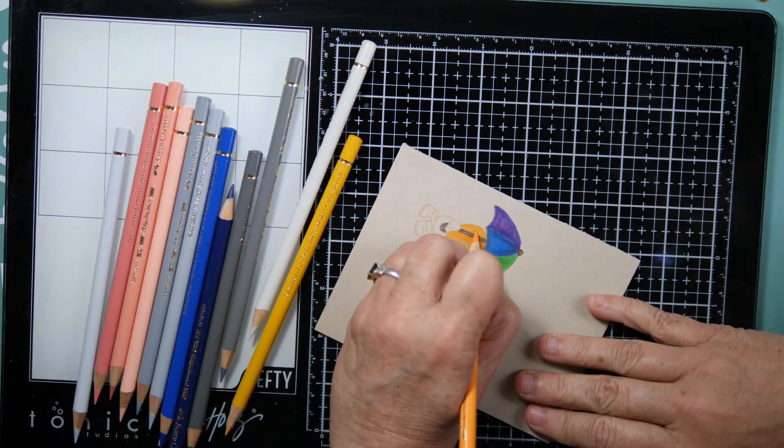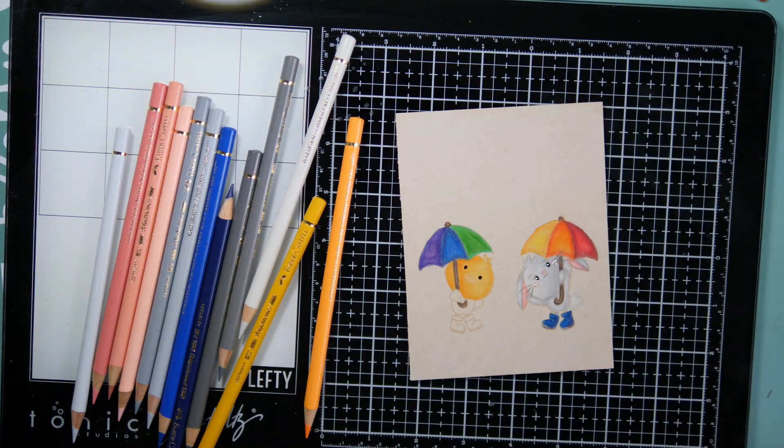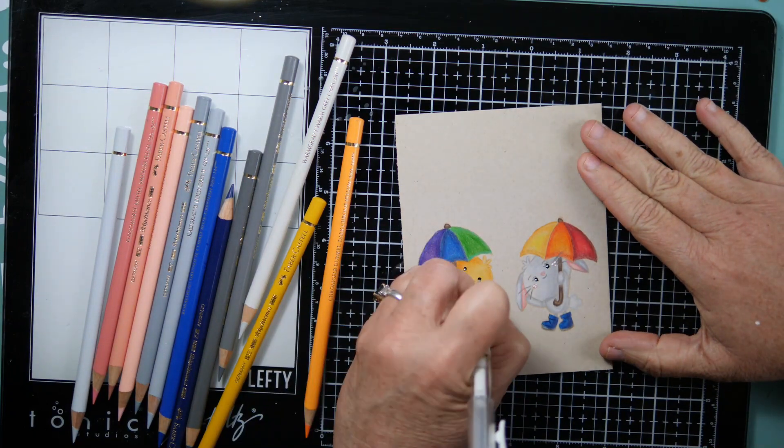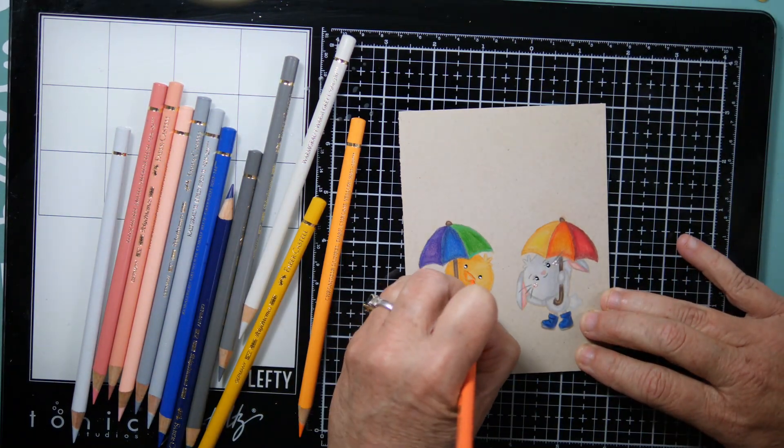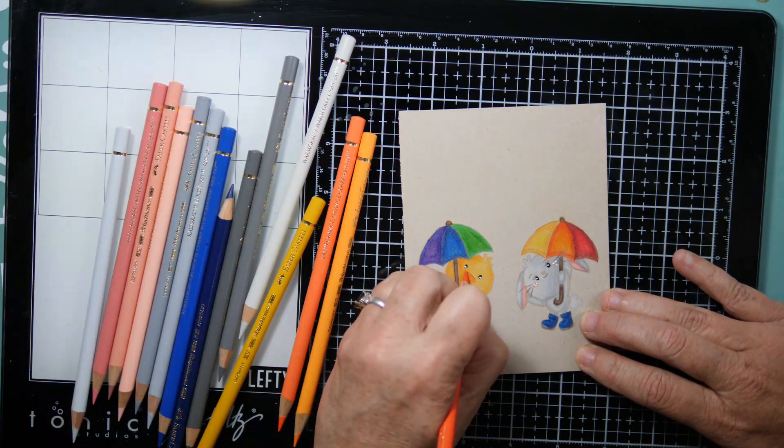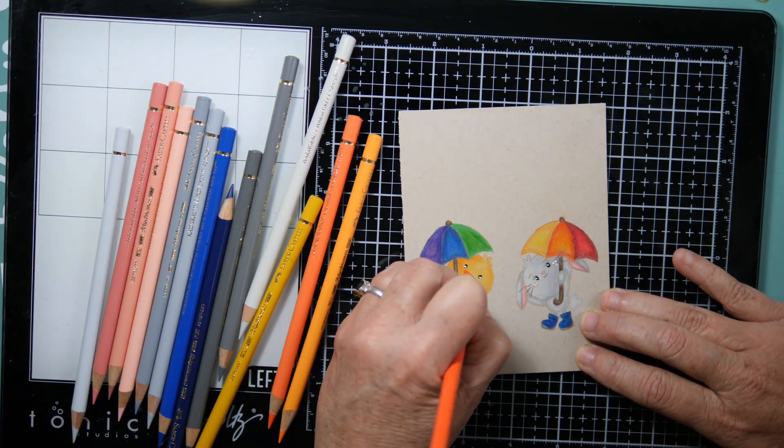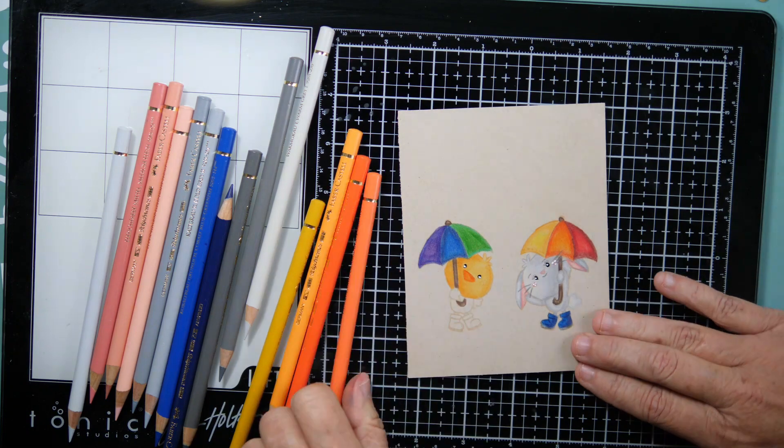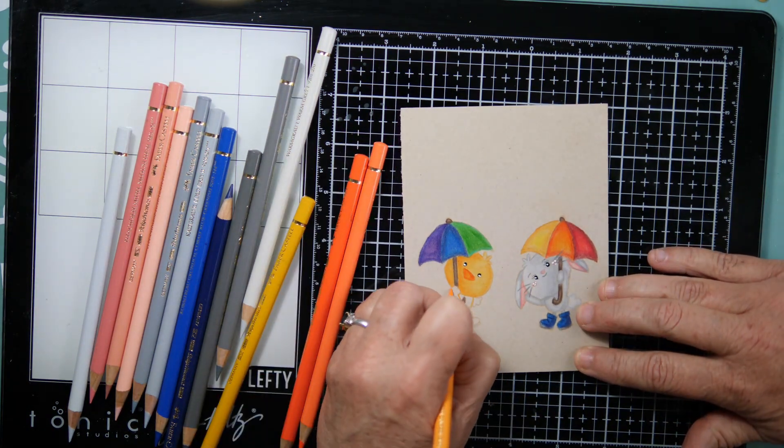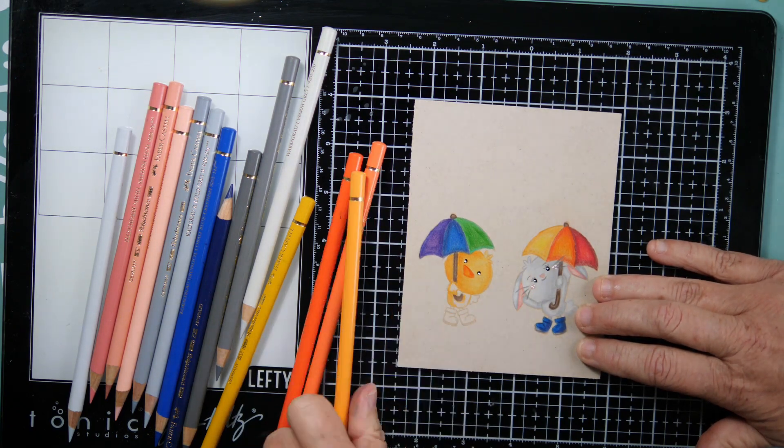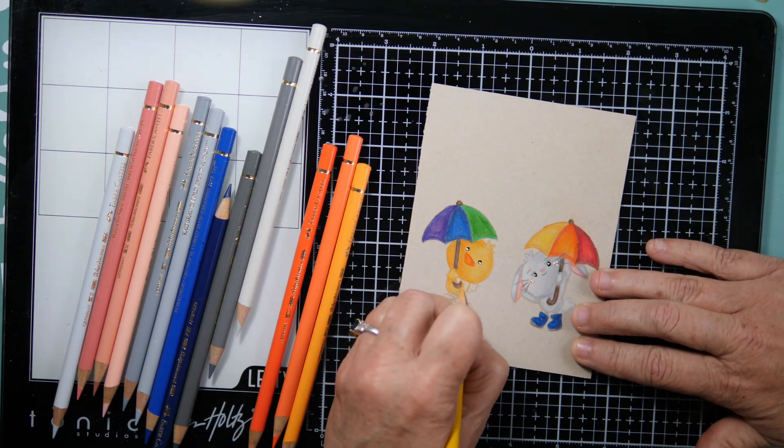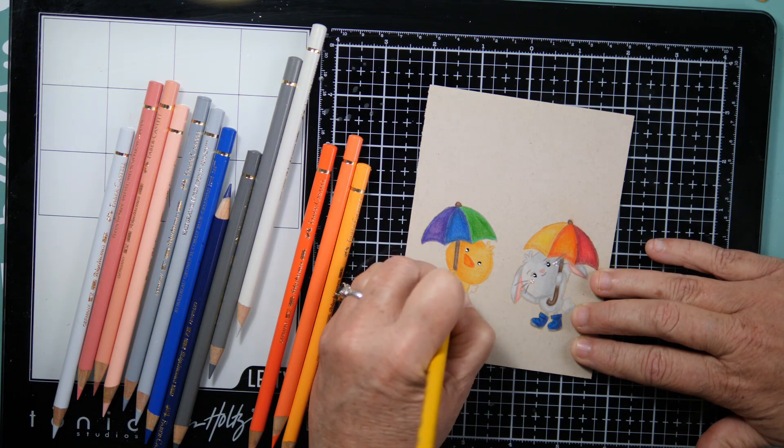When I colored those boots, I obviously used the blue tones. But for the bottoms I used warm grays to do the shading and then I added a highlight using that really light cool gray pencil. That just gives it a little bit of depth and dimension.